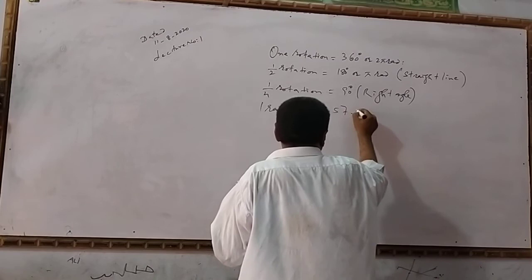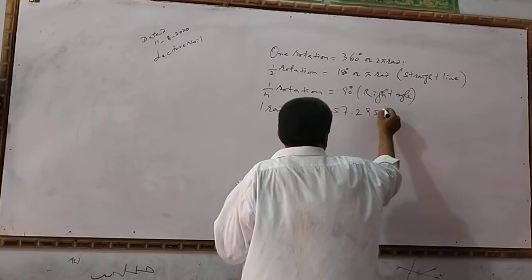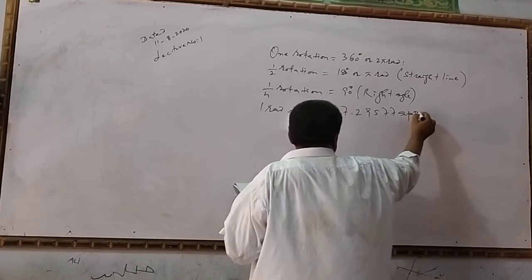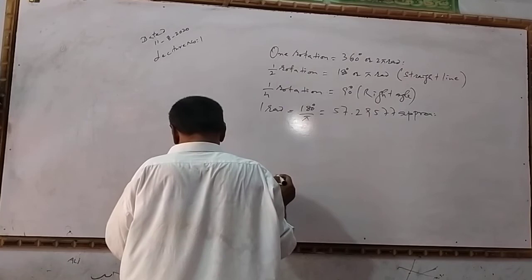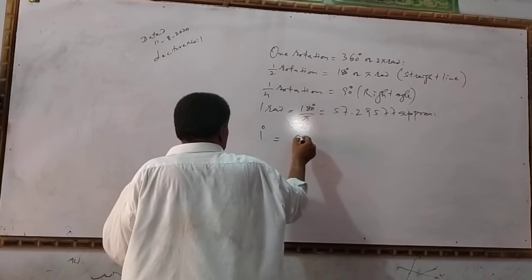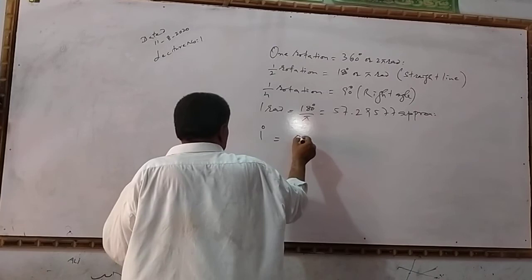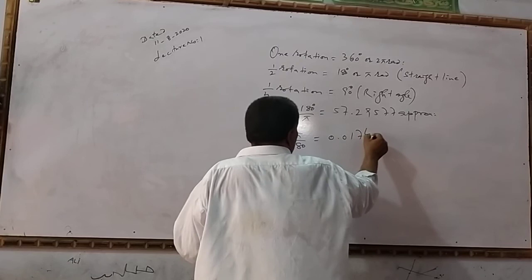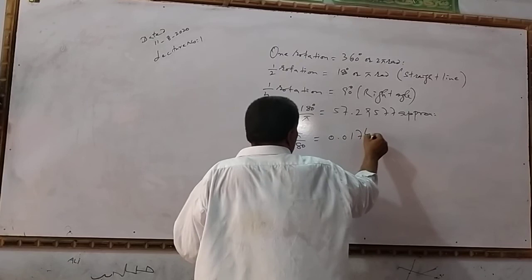1 radian equals 57.295 degrees. 1 degree equals π over 180, which equals 0.0174 radians.